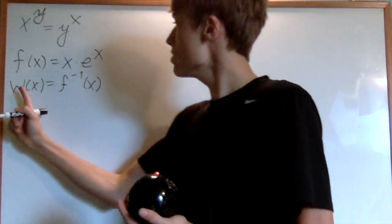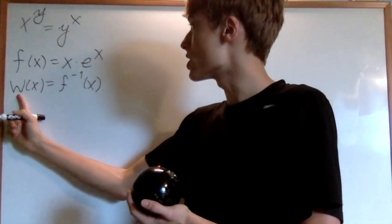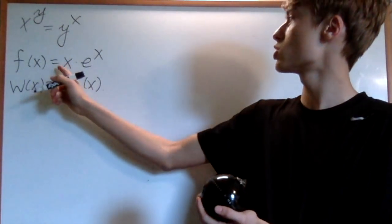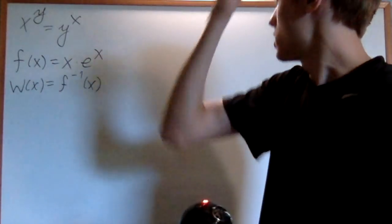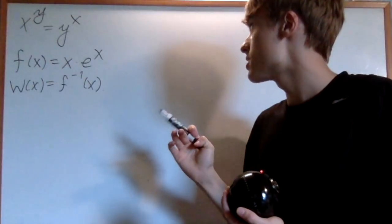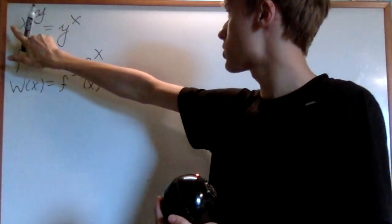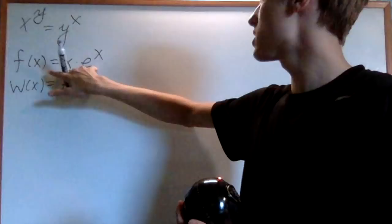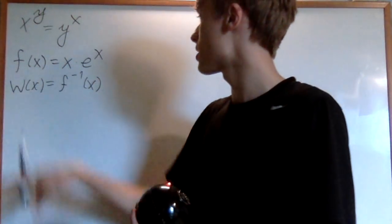So in other words, we can use the Lambert W function to cancel out any functions that look like this. So my reasoning is that you should try to make this equation into this form and then use the Lambert W function.